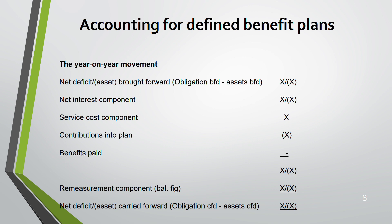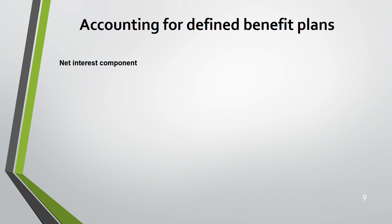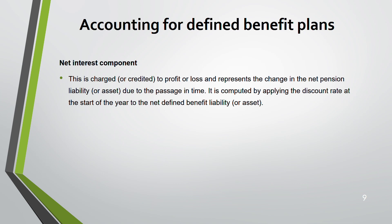Starting with net interest: this is an expense charged to P&L. Think of it like a long-term bank loan — there is always interest on a long-term liability. The discount rate will be given; apply it to the opening net balance (obligation minus asset). If it's a net liability, you add the interest; if it's a net asset, you deduct the interest.